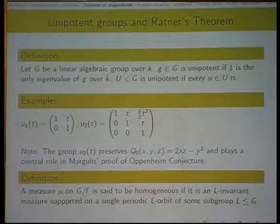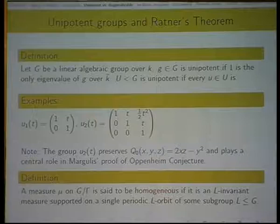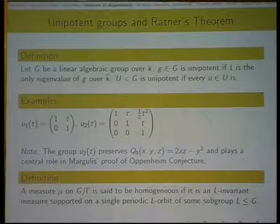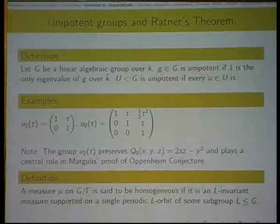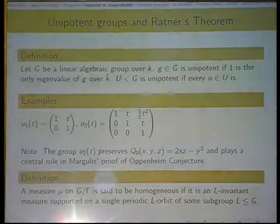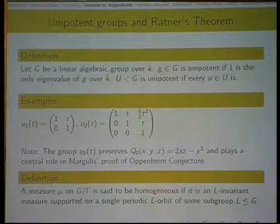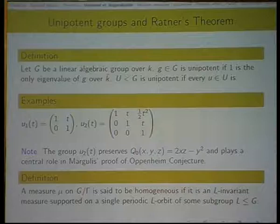So, let me tell you now about more generally about Raghunathan's conjecture and its eventual resolution by Ratner. I've mentioned the word unipotent a few times. Let me now give a definition of what unipotent means. So I take G to be a linear algebraic group over some field K. An element, little g and big G, is unipotent if, so a linear algebraic group is just a group of matrices. If I have a matrix I know how to take eigenvalues. An element is unipotent if one is the only eigenvalue of this matrix over the algebraic closure of K. And a group is unipotent if every element of it is. So here are some examples of unipotent groups, unipotent elements. It's not so hard to diagonalize these matrices and see that the only eigenvalue they have is one. And this group U_2 is not a random group. It preserves this quadratic form, particular quadratic form I gave earlier. And it plays a very crucial central role in Margulis' proof of the Oppenheim conjecture.